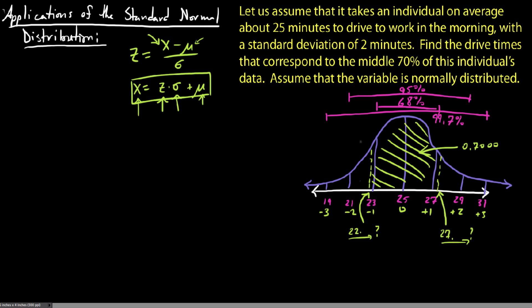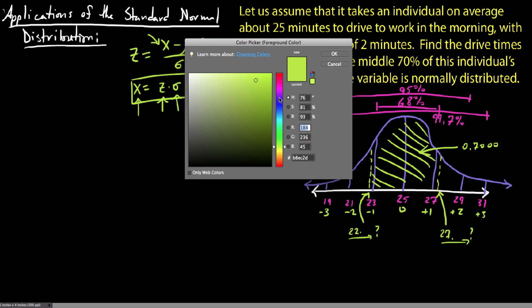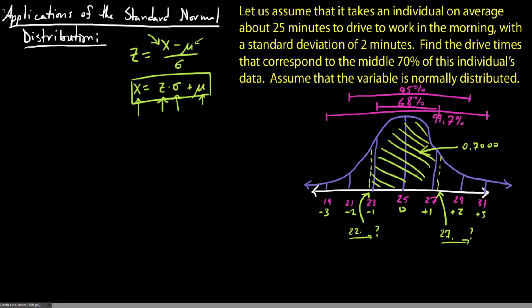Let's go ahead and get started on this. If this entire area is 70%, I just want to mention that, of course, from the mean out to one of those individual z-scores, from here to here, that would be half of that total area, so 0.35%, or 0.3500.